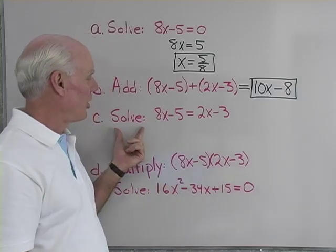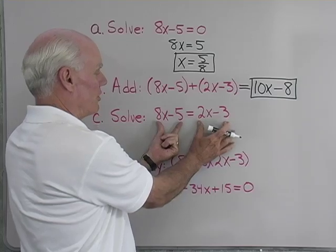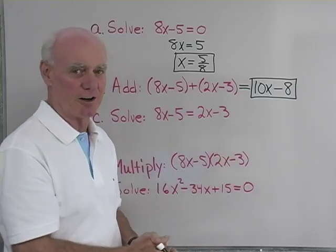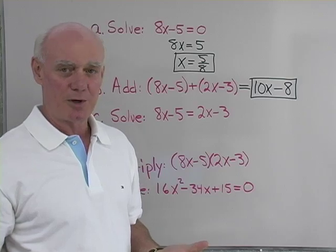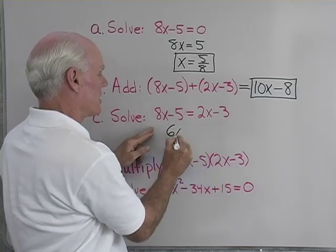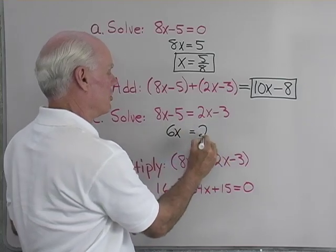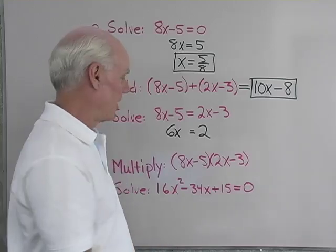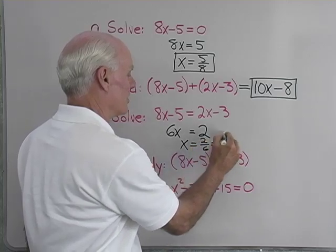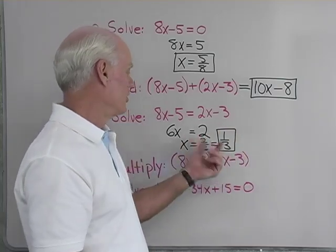Next problem, solve 8x minus 5 equals 2x minus 3. So I have a linear equation in one variable. I'll collect all the variable terms on one side, all the constant terms on the other. Adding negative 2x to both sides, I get 6x on the left side. And I'll add positive 5 to both sides and get 2 on the right side. Multiply both sides by 1 sixth, and I end up with x equal 2 over 6, which is 1 third. So there's my solution to that equation.